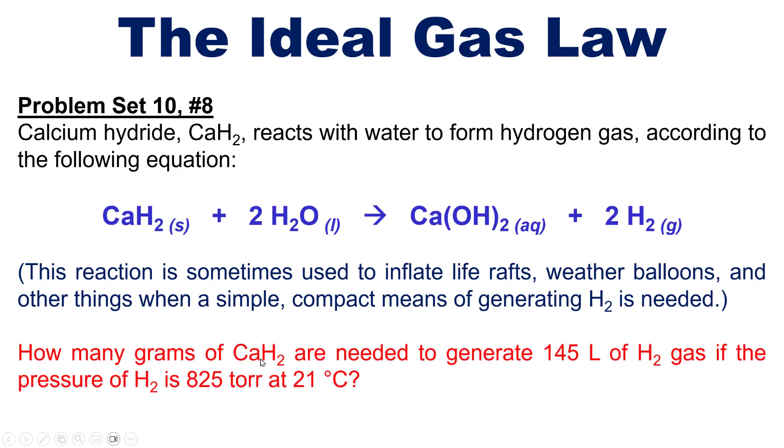Now given this equation, how many grams of calcium hydride are needed to generate 145 liters of H2 gas if the pressure of the H2 is 825 torr and the temperature is 21 degrees C?